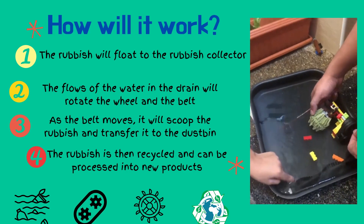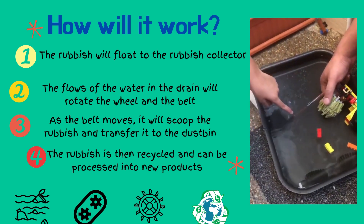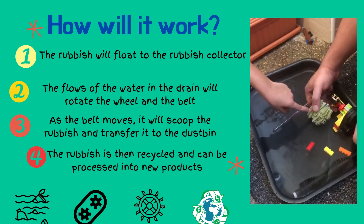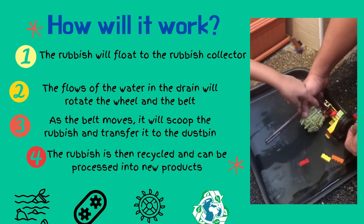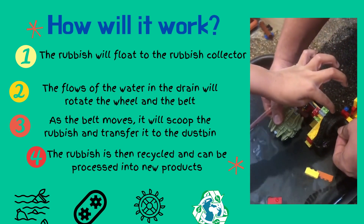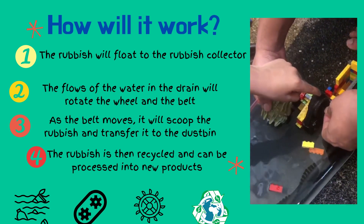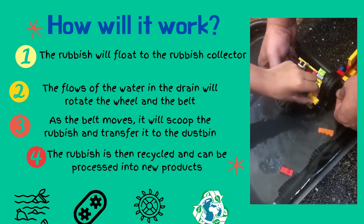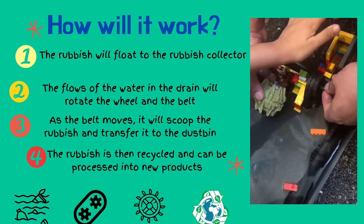When the rubbish is collected by the helical rocker, it gets blocked by this floating barrier, and this wheel will rotate because of the water flow. This wheel is also connected to a gear, and this gear is connected to a bell. So when this wheel rotates, so does the bell. And when the bell rotates, this rubbish gets carried away from the drain and into the rubbish room.